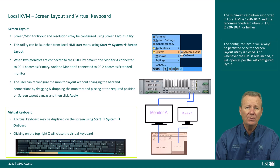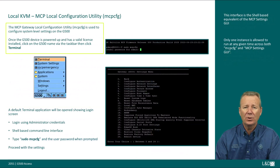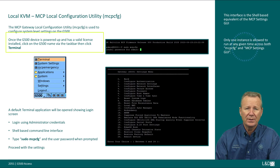A virtual keyboard may be displayed on the screen using Start, System, Onboard. Clicking the top right X will close the virtual keyboard. The MCP Gateway local configuration utility is used to configure system level settings on the G500. The interface is the shell-based equivalent of the MCP settings GUI. Only one instance is allowed to run at any given time across both MCP CFG and MCP settings GUI.